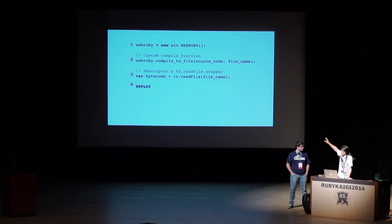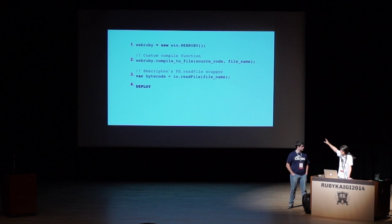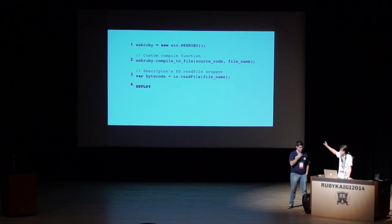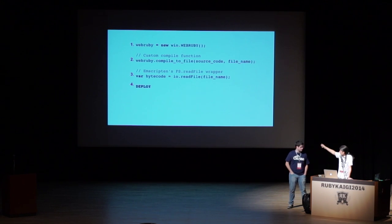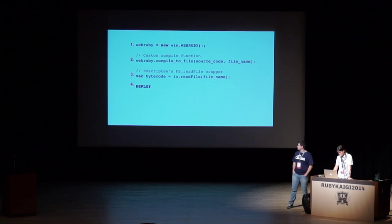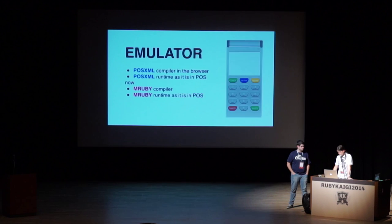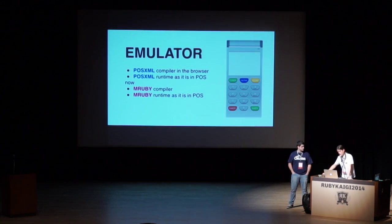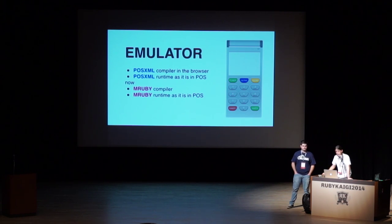That person's work is amazing — based on his projects, we managed to build our systems. Essentially nowadays, for our development environment, to compile a Ruby project in the web is as simple as this: we create a new WebRuby object, compile a file, read the bytecode, and deploy to the servers. We used to have a compiler and an emulator for POSXMO — now the challenge is to make the emulator for mRuby.